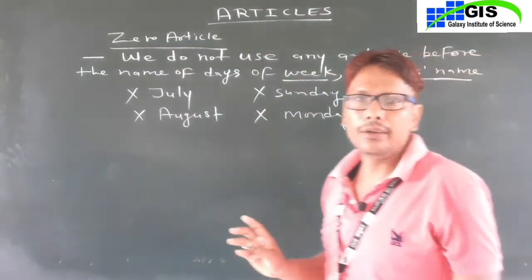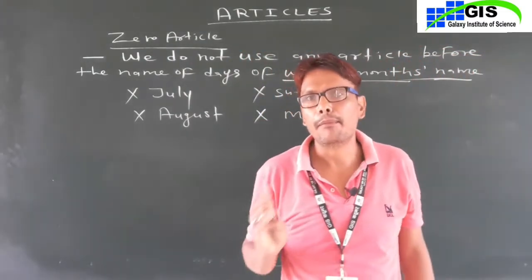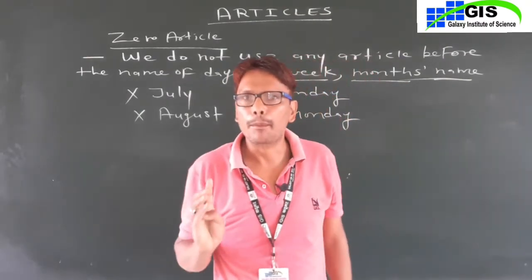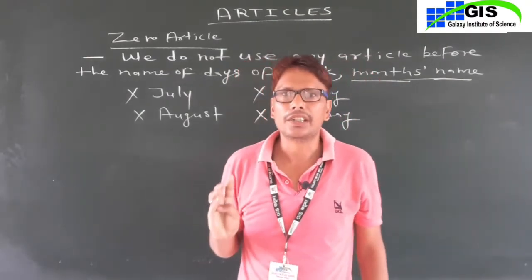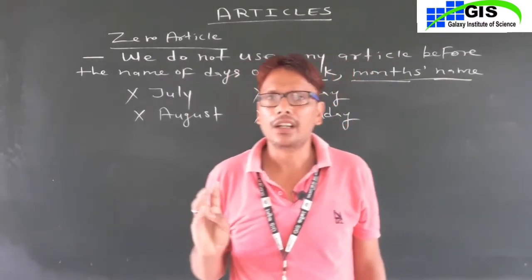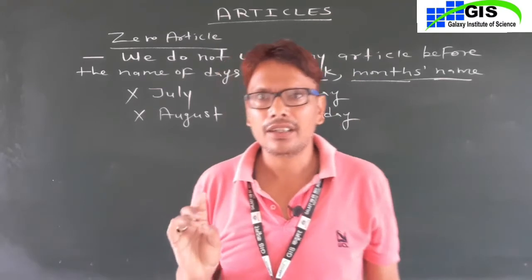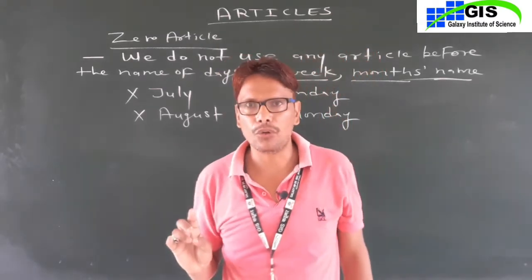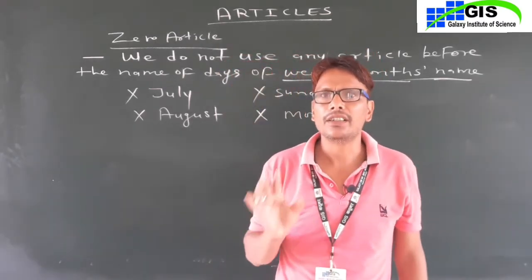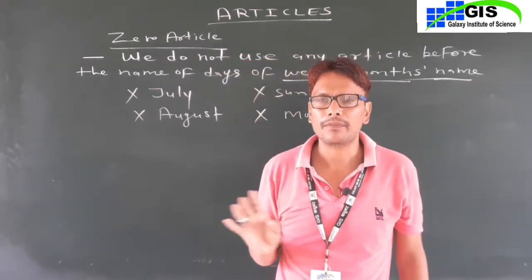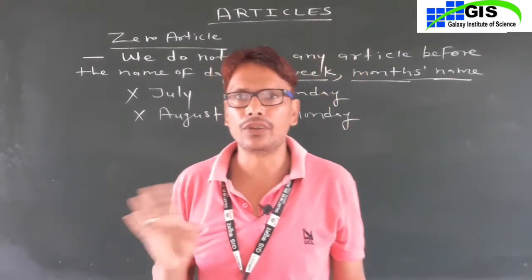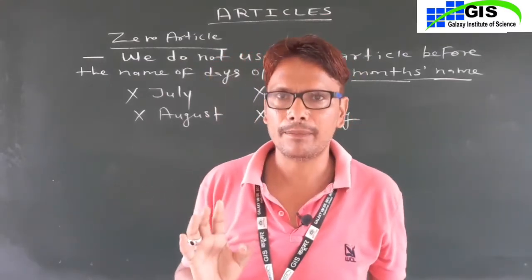The months are: January, February, March, April, May, June, July, August, September, October, November, and December. We never use any article before these names.